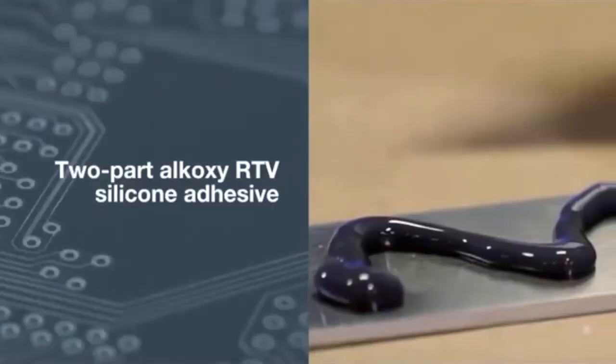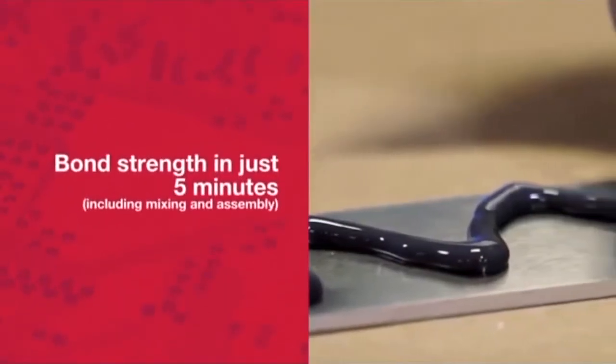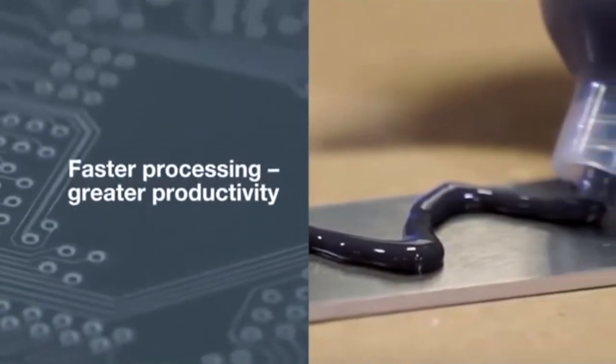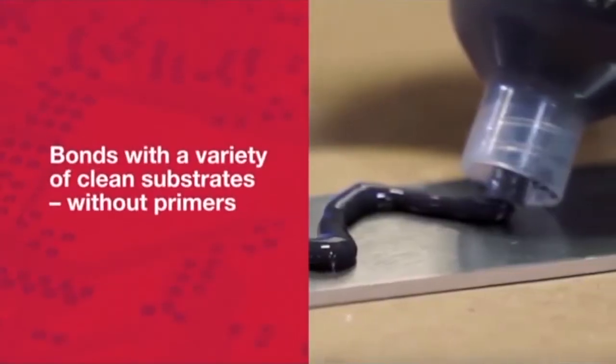This two-part Alcoxy RTV silicone adhesive provides bond strength in just five minutes for faster processing and greater productivity for appliance manufacturers. It bonds with a variety of clean substrates without primers.